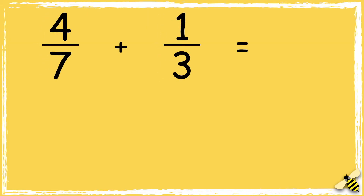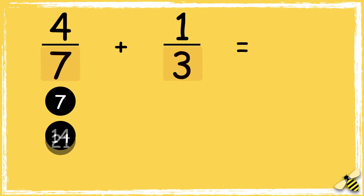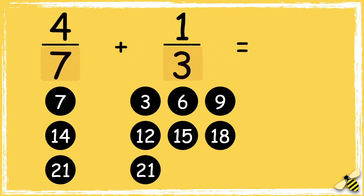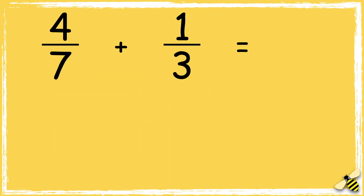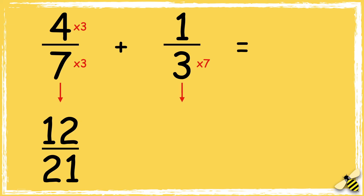Let's have a look at another example: 4 sevenths add 1 third. We need to find a common denominator, so let's look at the multiples of 7 and 3. I can see that 21 is the lowest common multiple, so I can make both denominators 21. We need to multiply 7 by 3 to make 21, so we also multiply the numerator by 3 — 4 times 3 is 12. Then multiply 3 by 7 to get 21, so we also multiply the numerator by 7 — 1 times 7 is 7.